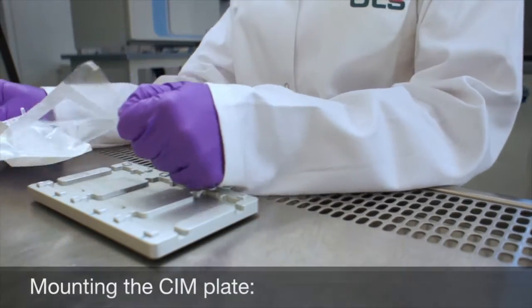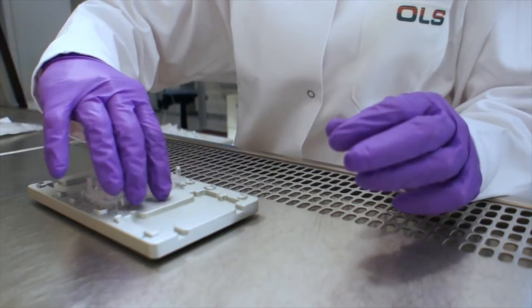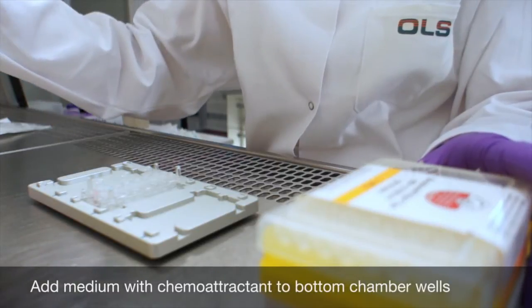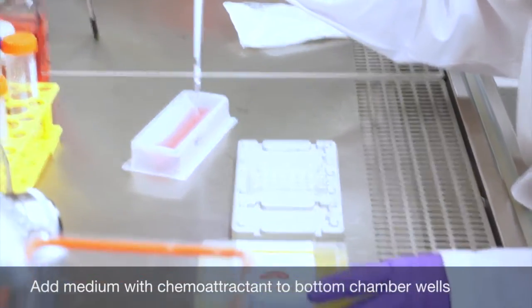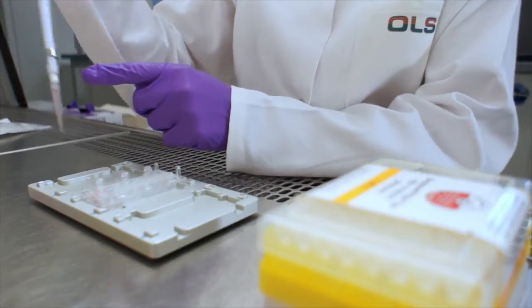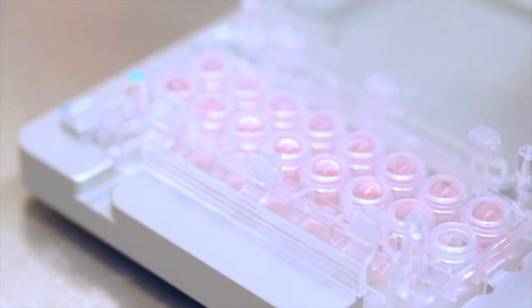To mount the SIM plate, place the bottom chamber in the assembly tool and add the medium containing the chemoattractants in each well. The slight liquid meniscus ensures the correct sealing without air bubbles.